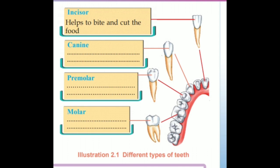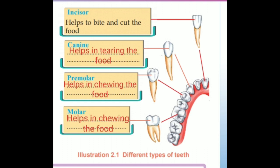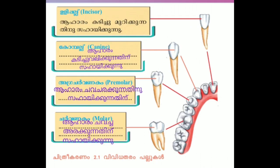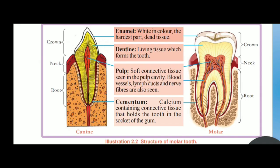Canine is 2, 2 — totaling 4. Premolars is 4, 4 — totaling 8. Molars is 6, 6 — totaling 12. Please check page number 21. This is the structure of the tooth on page 21.